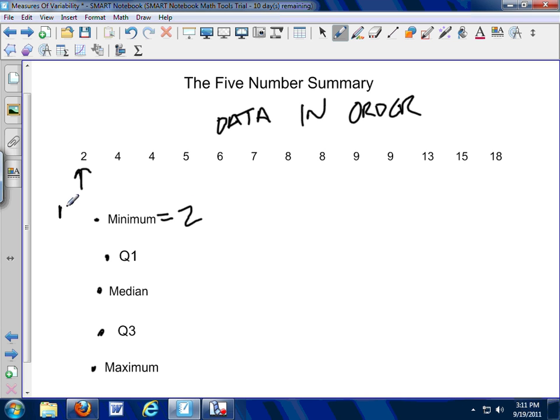So, we start with the minimum, and then we go to the maximum, which is the largest value. And in this case, the maximum is 18. So far, so good. Smallest number, biggest number. Then we've got to find the median. The median's my middle number, so it's helpful to know how many numbers I have here. One, two, three, four, five, six, seven, eight, nine, ten, eleven, twelve, thirteen.